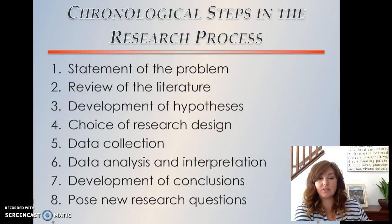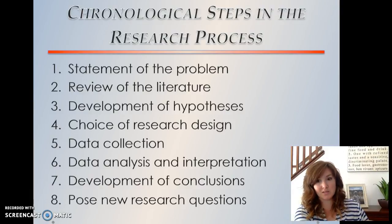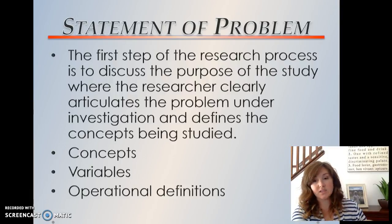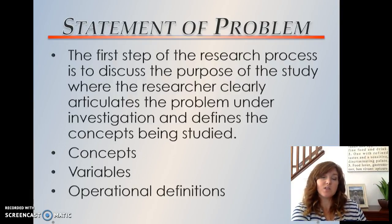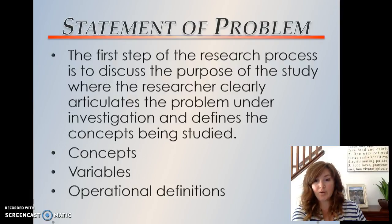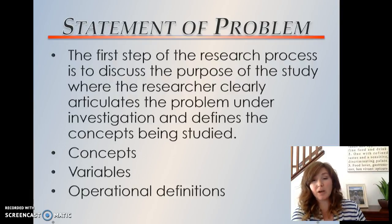We see the chronological steps in the research process — there are eight in total. Make sure to get your notecards out and have your brainstorming worksheet, because you need to be able to apply this to your research project for this semester, and it will also be on the test. The first step is to state the problem. This is where we discuss the purpose of the study and clearly articulate the problem under investigation and the concepts being studied. We need to define the concepts, identify the variables that might influence our study, and bring those together to create the operational definition, which is a measurable definition. Once we've identified all the concepts and variables, we put it together to make a hypothesis that we can measure.